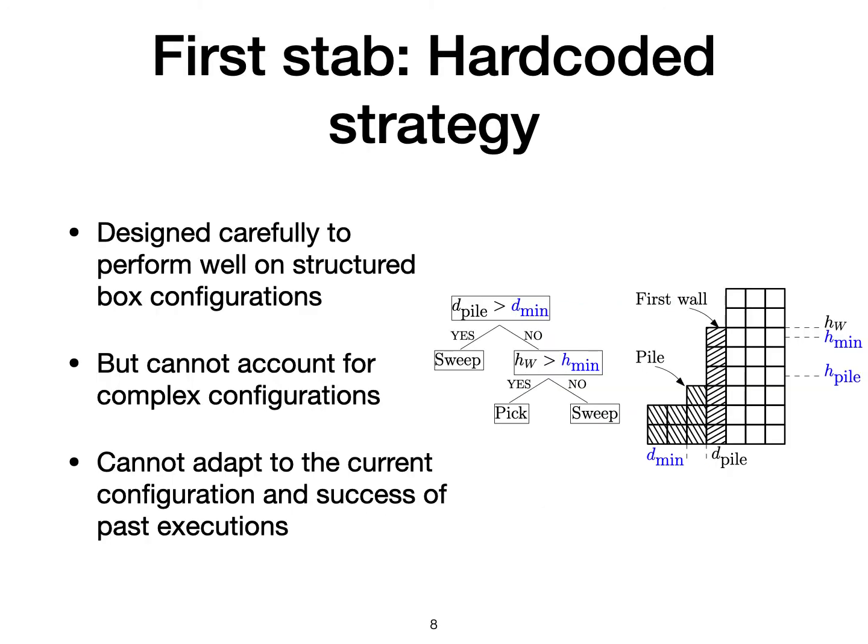As a first attempt, we have hand-designed a strategy using domain knowledge that exhibits good performance on a wide variety of box configurations. The strategy is shown on the right and is very simple: it examines if there is a pile of boxes on the floor; if so, it uses the nose to sweep the boxes, else it decides to pick the wall of boxes if they are sufficiently high. However, due to its hardcoded nature, this strategy cannot adapt to the box configuration and history of past executions.